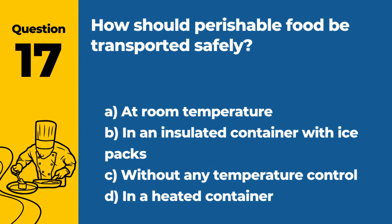Question 17. How should perishable food be transported safely? a. At room temperature. b. In an insulated container with ice packs. c. Without any temperature control. d. In a heated container. Answer b. In an insulated container with ice packs. Perishable food should be transported in an insulated container with ice packs to keep it at a safe temperature.